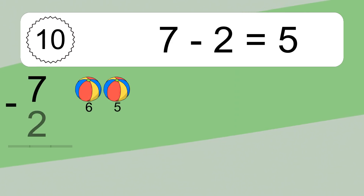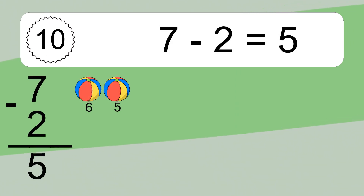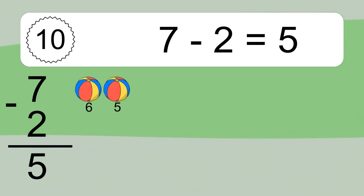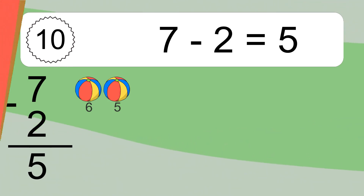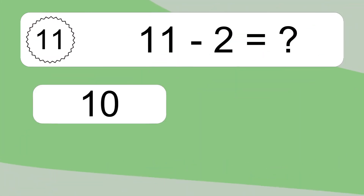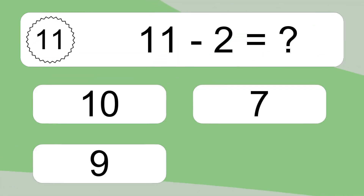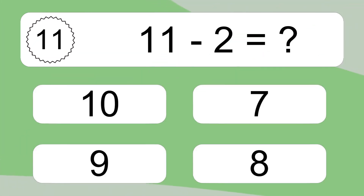7 minus 2 equals 5. Let's count it: 6, 5. 11 minus 2 equals what?